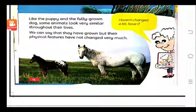Like a puppy and a fully grown dog, some animals look very similar throughout their life. From birth till their adult age, their physical features remain the same — similar rahte hain. We can say that they have grown, but their physical features have not changed very much.